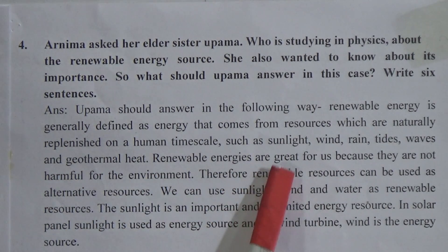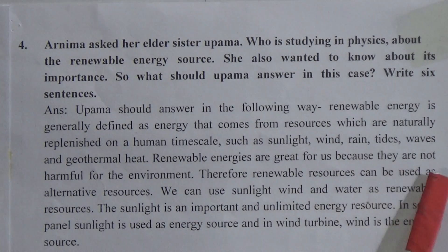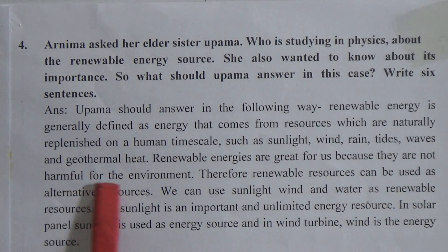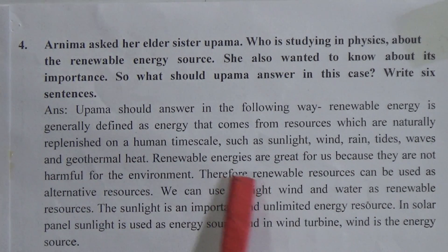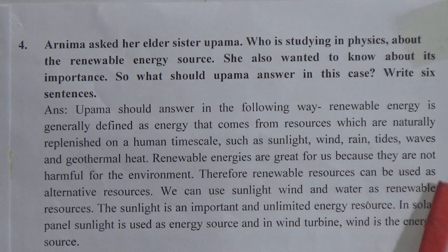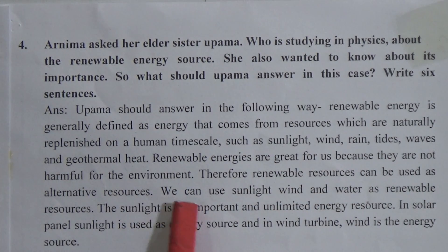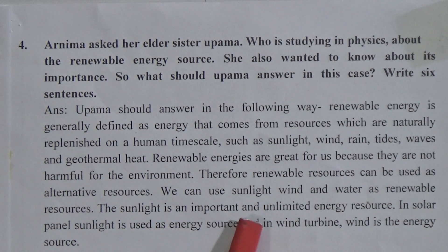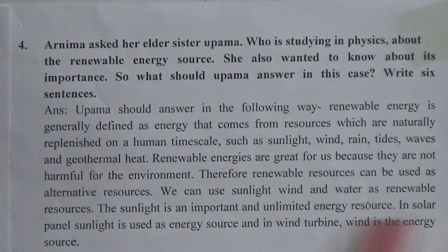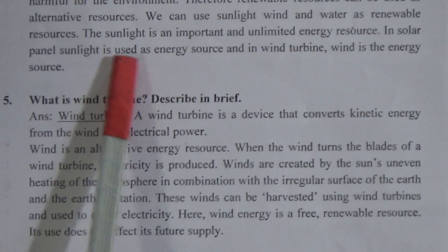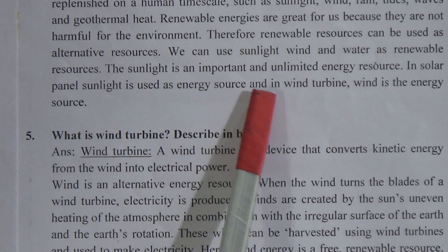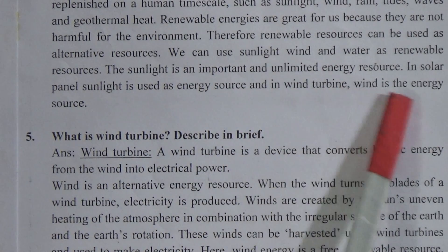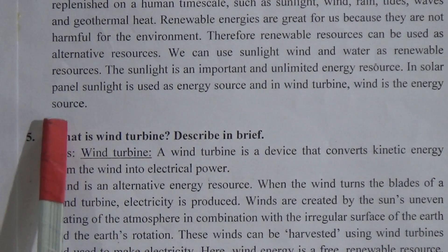Renewable energies are great for us because they are not harmful to the environment. Therefore, renewable resources can be used as alternative resources. We can use sunlight, wind, and water as renewable resources. Sunlight is an important and unlimited energy resource. In solar panels, sunlight is used as the energy source, and in wind turbines, wind is the energy source.